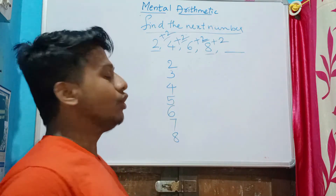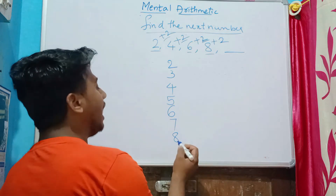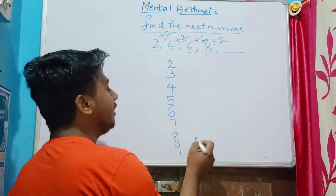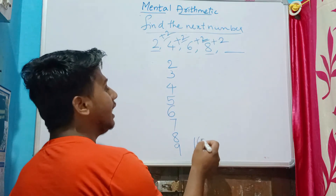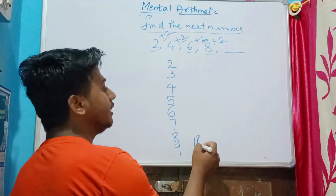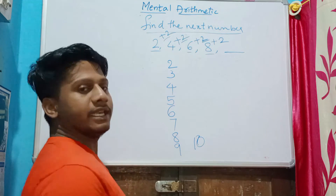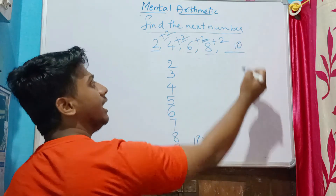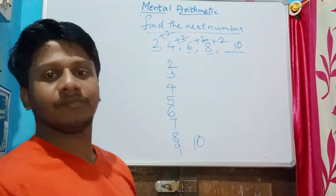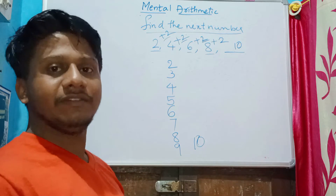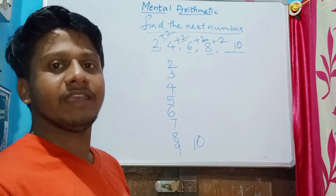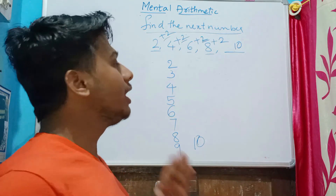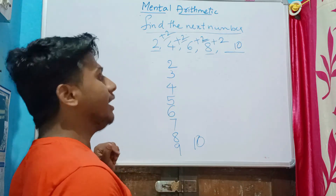So the same way, I add two to eight. After eight, nine, we get ten. So ten is the answer. I hope there's no confusion, kids.